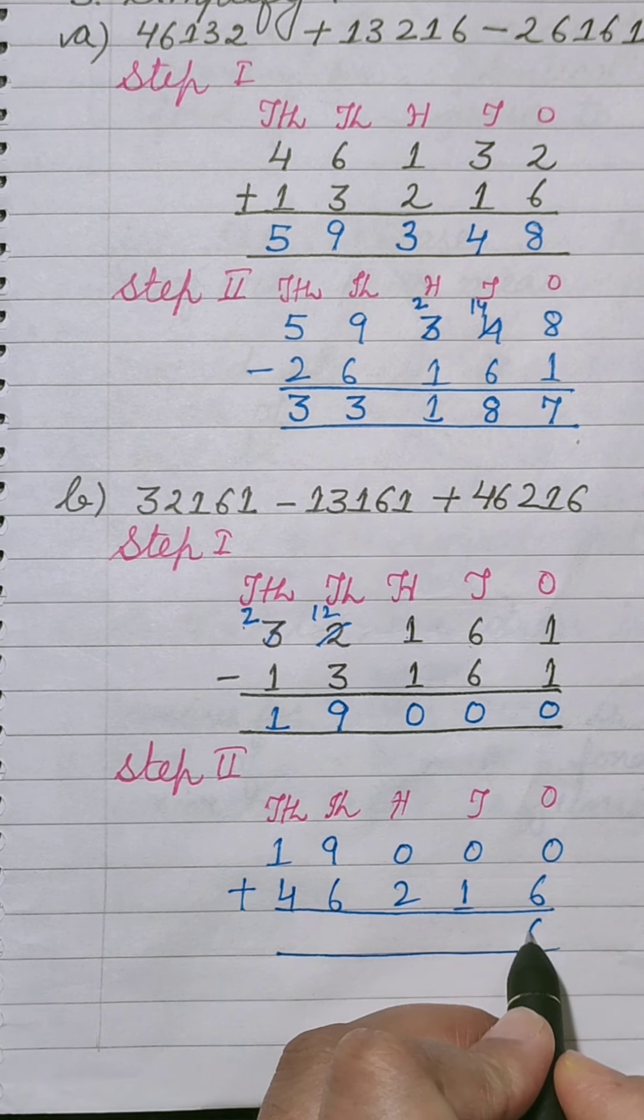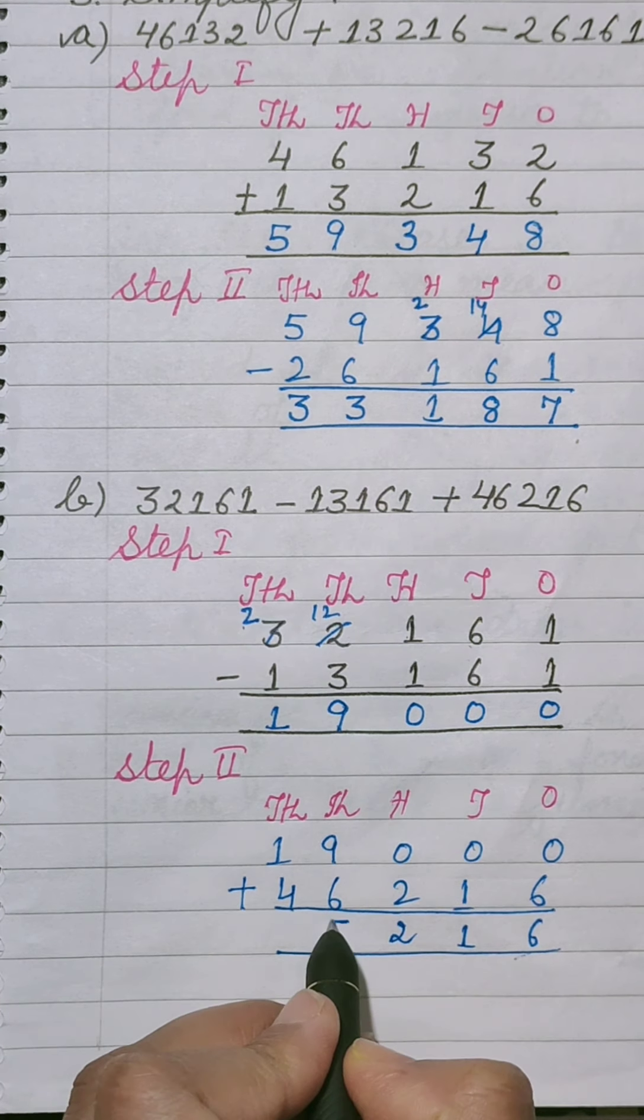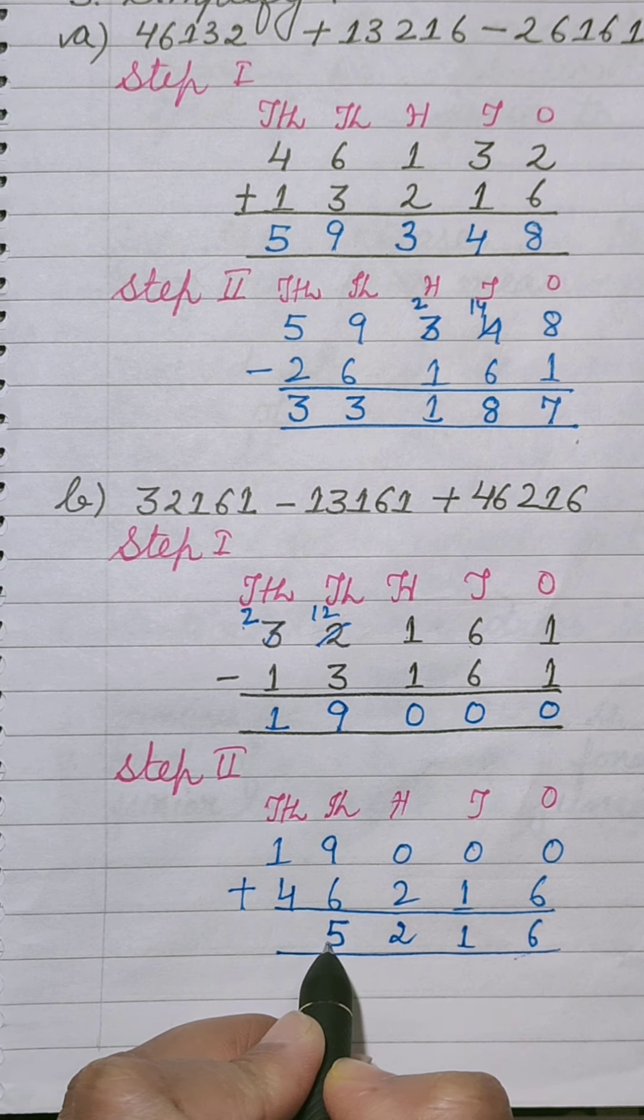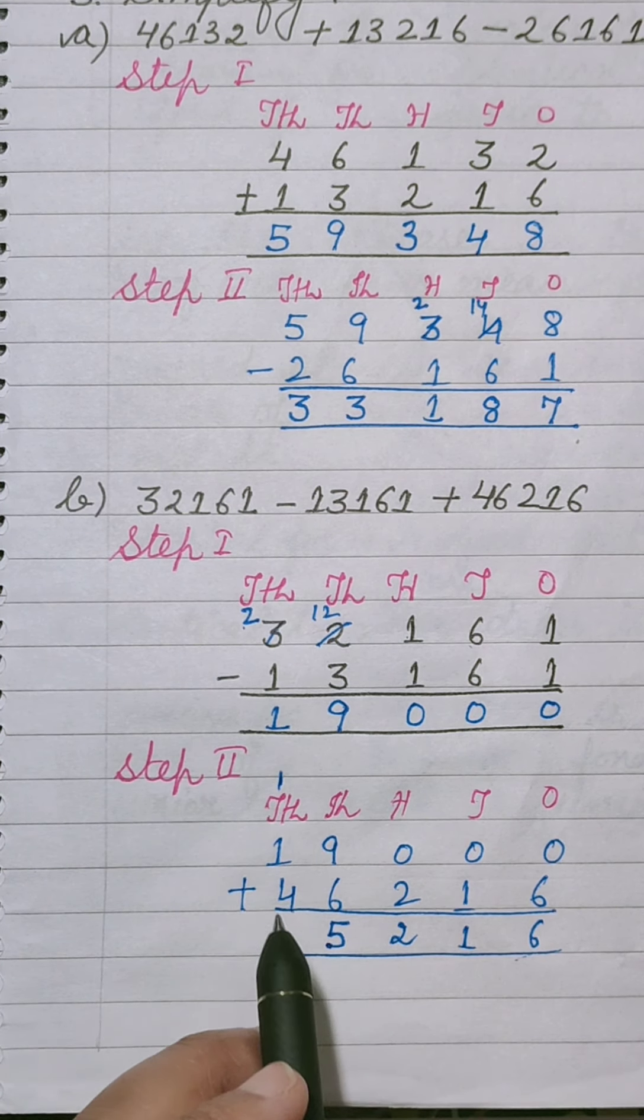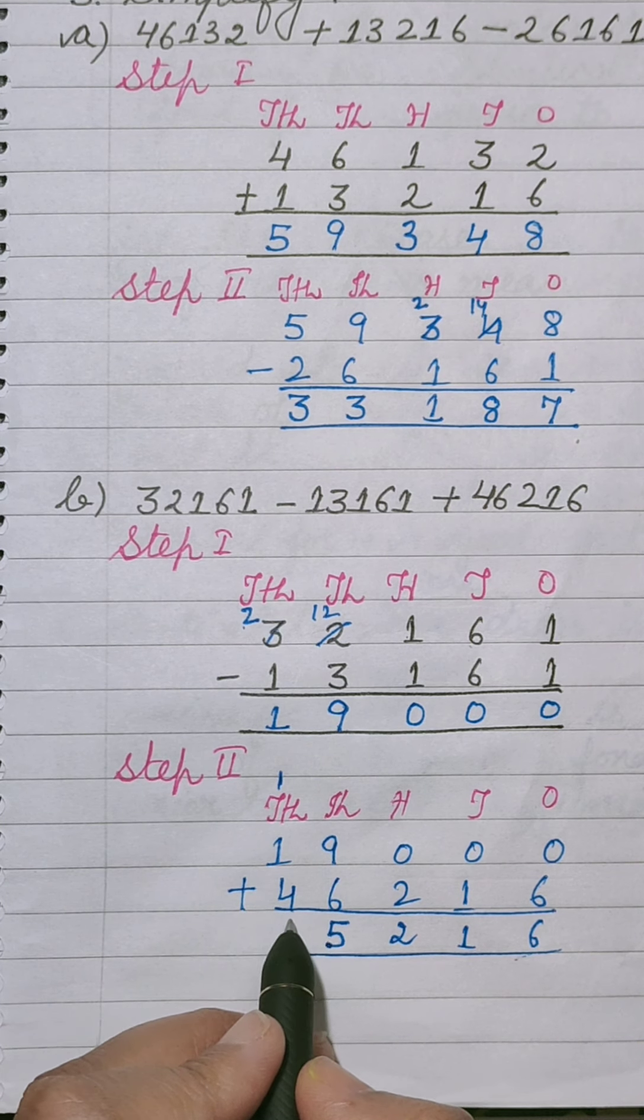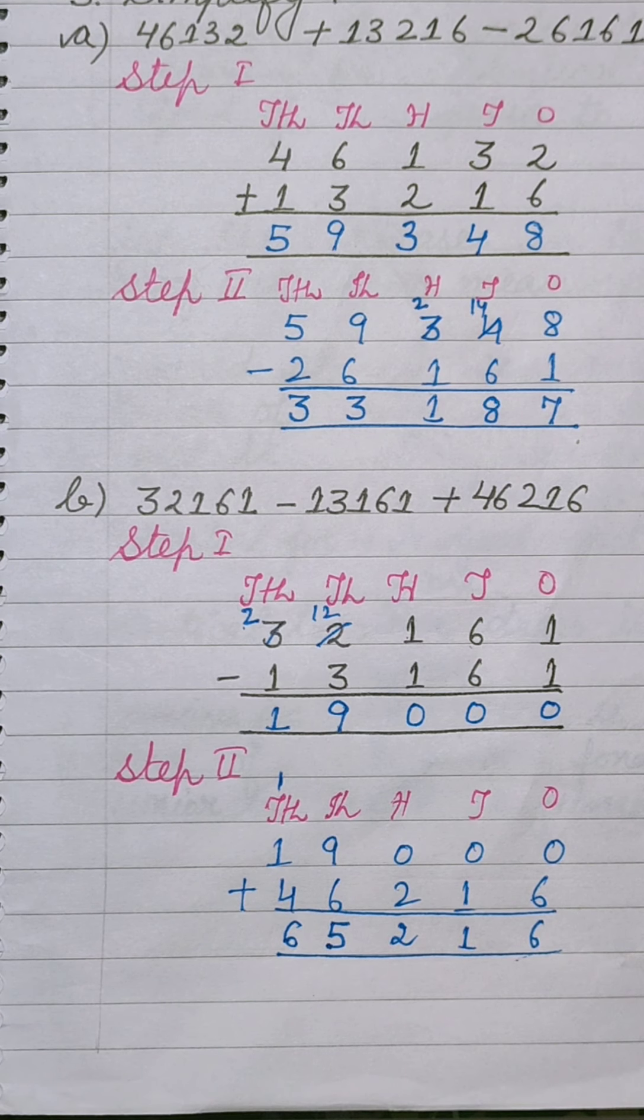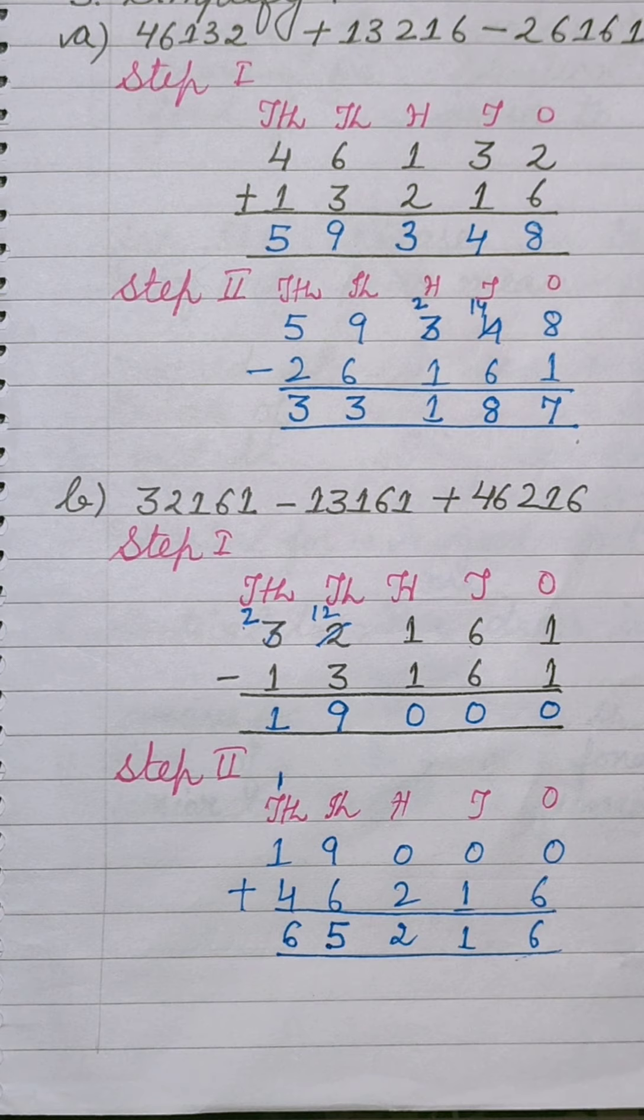Now we will add these numbers. 0 plus 6 is 6, 0 plus 1 is 1, 0 plus 2 is 2, 9 plus 6 is 15. 15 का 5 will be placed here and 1 will carry over 10,000 place. 1 plus 4 is 5, plus 1 is 6. Clear? So answer is 65,216.